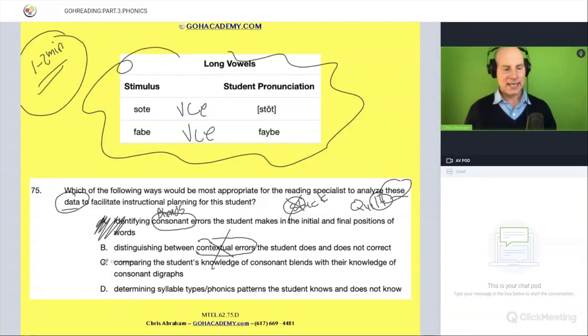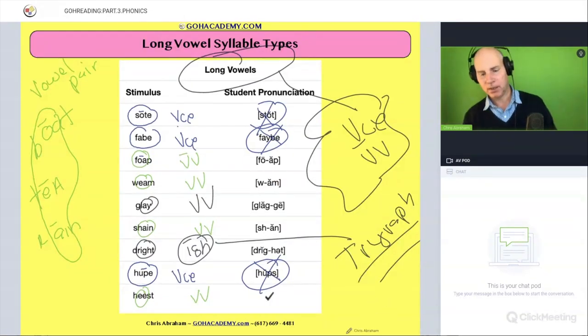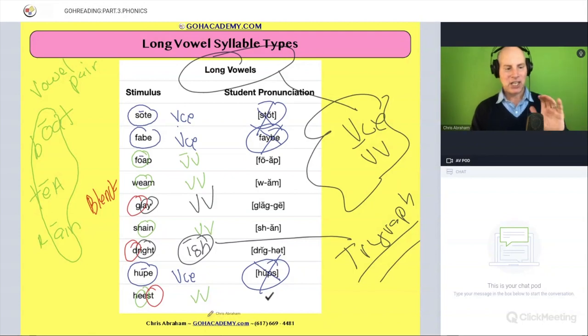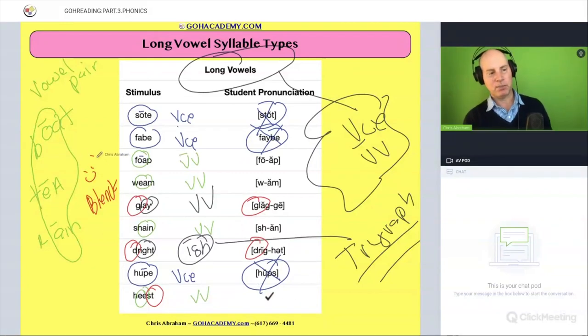How about C, comparing the student's knowledge of consonant blends to their knowledge of consonant digraphs? There's no consonant blends here and there's no consonant digraphs. Look closely. I mean, there are a couple. You know what, to be fair, there are a few blends. That's a blend. That's a blend. That's a blend, right? But it doesn't look like they have an issue with that blend or that blend and they got that one right. So they don't have an issue. They're okay with blends. And in terms of digraphs, consonant digraphs, there are consonant digraphs here, the SH, but they got that right. Let me see any others. Okay. So that's really not the issue either.